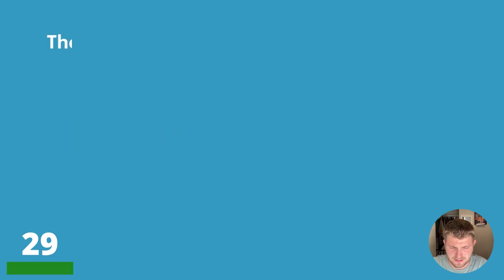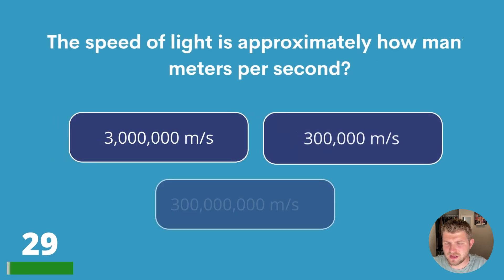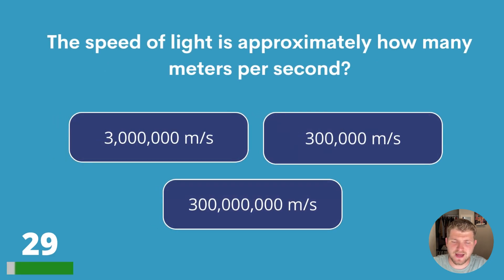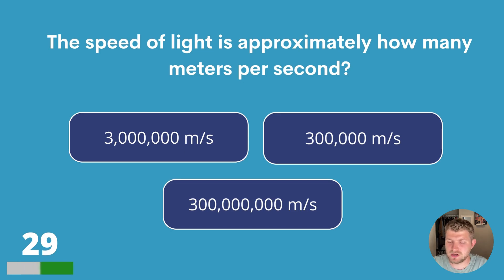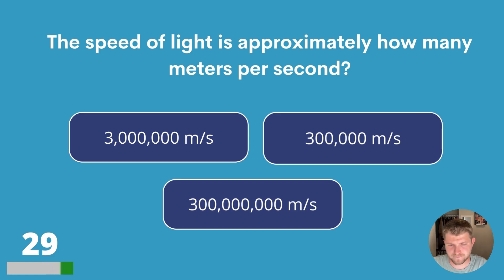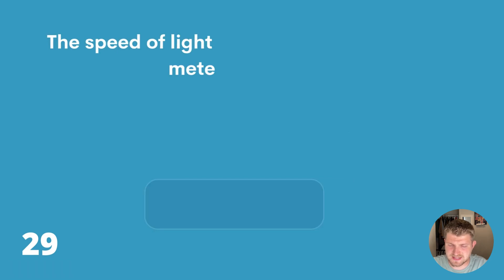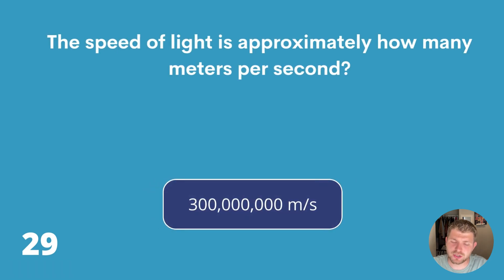Question twenty-nine. The speed of light is approximately how many metres per second? Three million, three hundred thousand, or three hundred million metres per second? The answer is three hundred million metres per second.